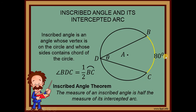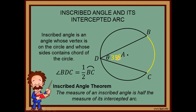The inscribed angle theorem states that the measure of an inscribed angle is half — kalahati — of the measure of its intercepted arc. So angle BDC is half of arc BC. For example, if arc BC is 80 degrees, theta is 40 degrees. If arc BC is 90, theta is 45. If it's 100, theta is 50. Conversely, if the angle is given, the arc is double: if the inscribed angle is 35, the arc is 70 degrees; if the angle is 10, the arc is 20, and so on.